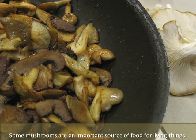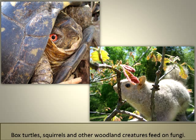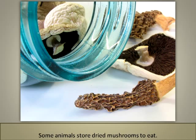Some mushrooms are an important source of food for living things. Microscopic organisms eat fungi. Some ants cultivate fungi for food. Some flies and beetles lay eggs in fungi for their offspring to eat. Box turtles, squirrels, and other woodland creatures feed on fungi. Some animals store dried mushrooms to eat.